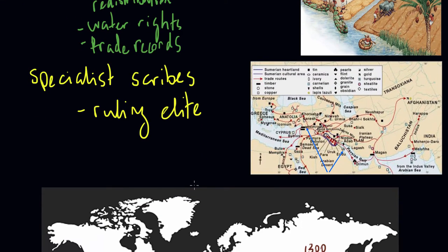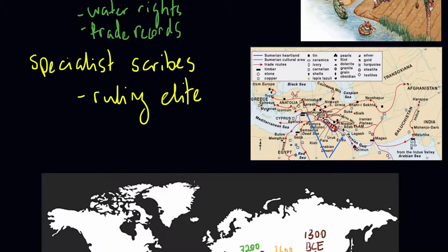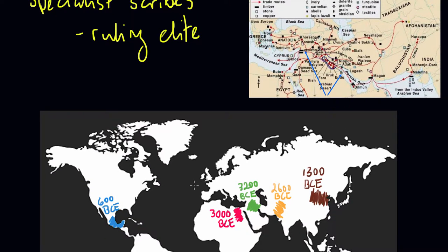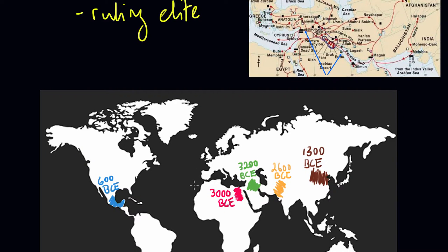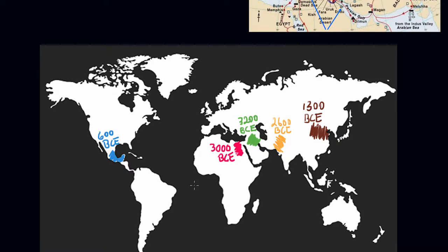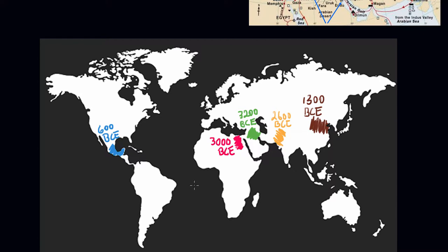But nevertheless, there's a really distinct pattern. And that is that all the societies which develop writing are food producing or agricultural societies that are sedentary and generally highly urbanised and engage in large scale trade and have a high degree of economic specialisation.